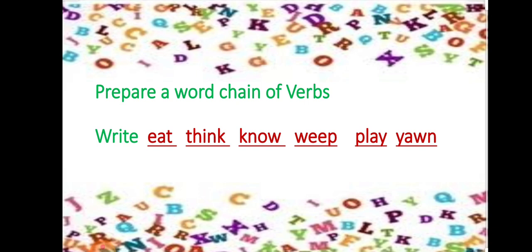Continuing the verb chain: eat ends with 't' so next is 'think', think ends with 'k' so next is 'know', know ends with 'w' so next is 'weep', weep ends with 'p' so next is 'play', and play ends with 'y' so next is 'yawn.'